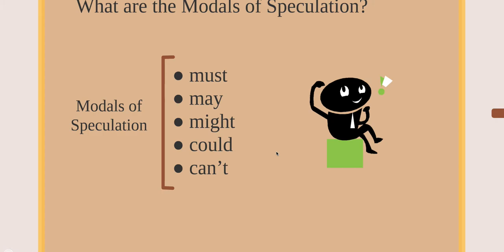In this group of modal verbs, we are going to have just five modal verbs. Please keep it in mind. The modals of speculation are: must, may, might, could, and can't. So what is the meaning of must? What happens if I say, 'You must go to the doctor'? It's not like giving a suggestion of what you should do — it's more like an order. 'Debe hacerlo.' It must be true. 'Debe ser verdad.' It must be my mother.